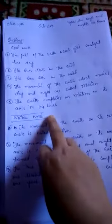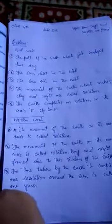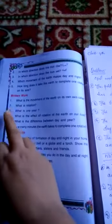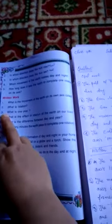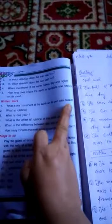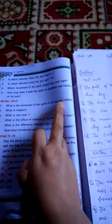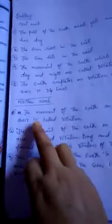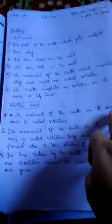Now for oral work and written work. Written work question: What is the movement of the earth on its own axis called? The movement of the earth on its own axis is called rotation.